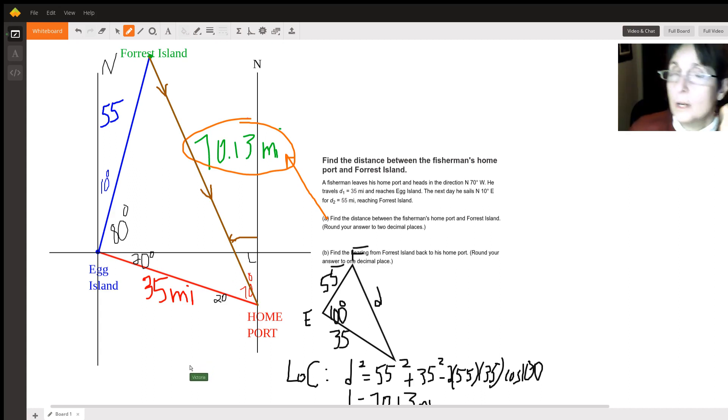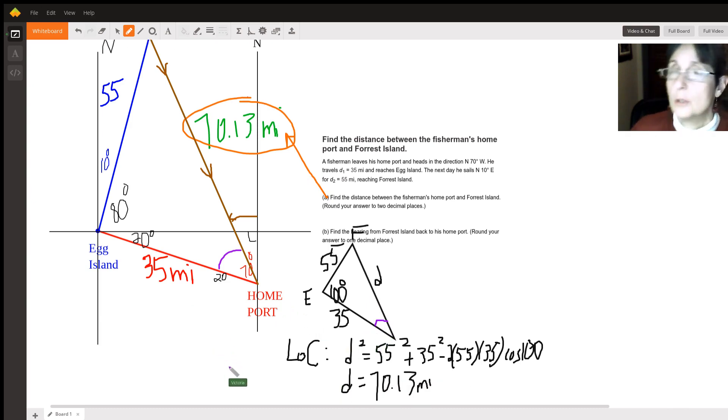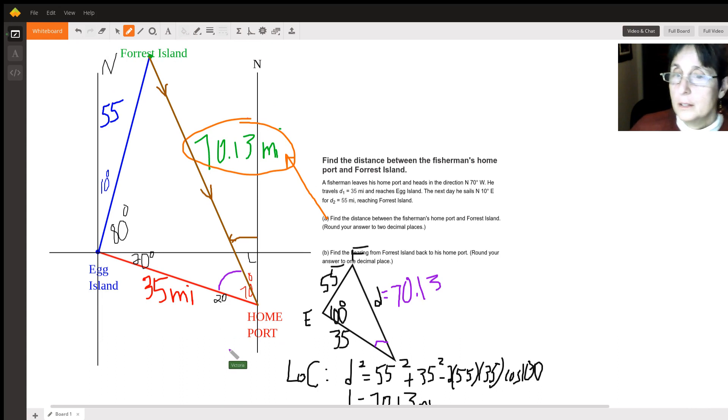So if we could find this angle right here, I need the pencil, if we could find this angle right here, which we can because it's just this angle right here, and we can use the law of sines because we now know that this is 70.13, it would help us